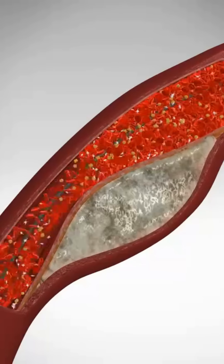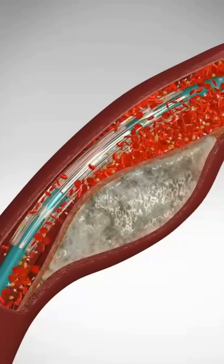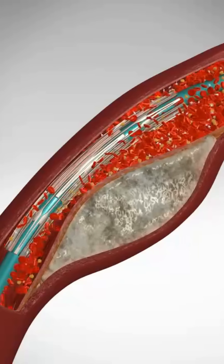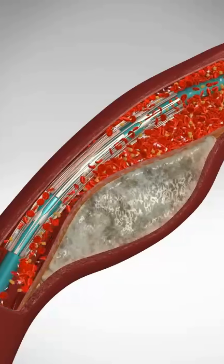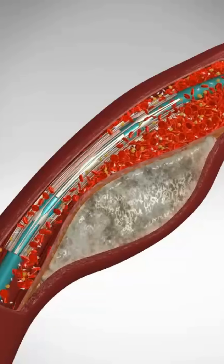And here comes the catheter. It has a balloon at its tip. Wrapped around the balloon is a tiny wire mesh cylinder called a stent.